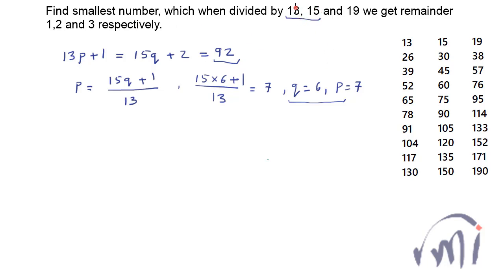When the number is divided by 13 you get remainder 1 and when the number is divided by 15 you get remainder 2. And after that all the numbers which will satisfy this condition will actually be in the form of 92 plus some x multiple of LCM of 13 and 15.